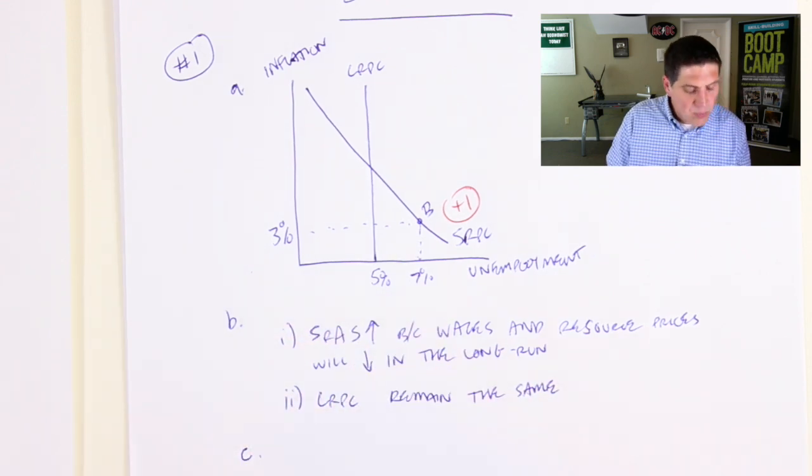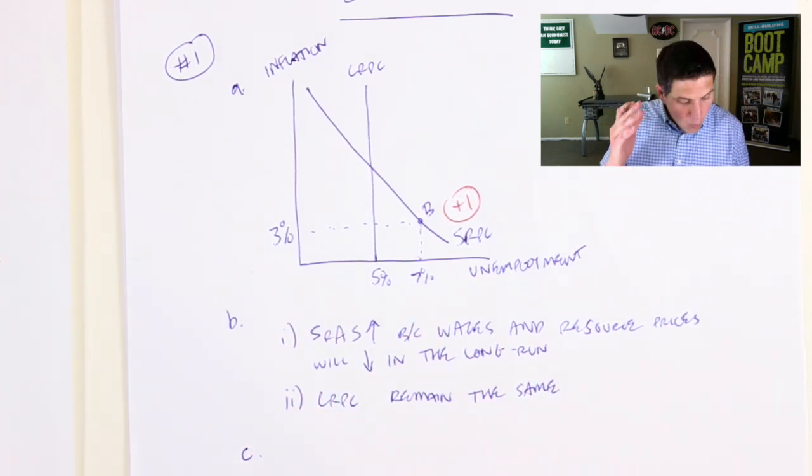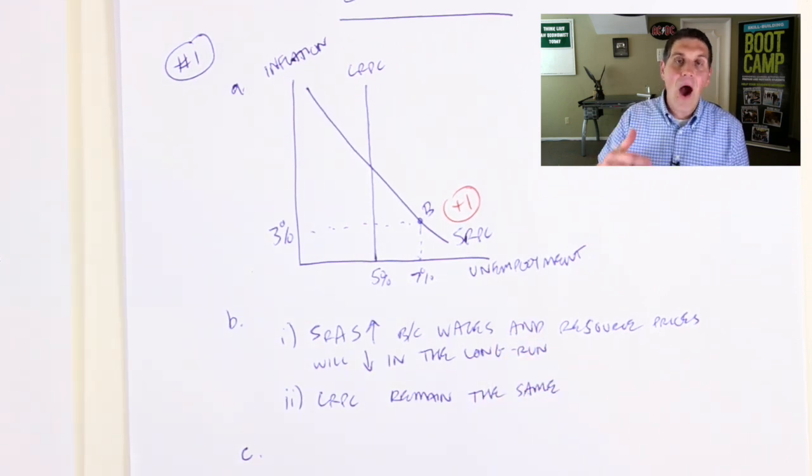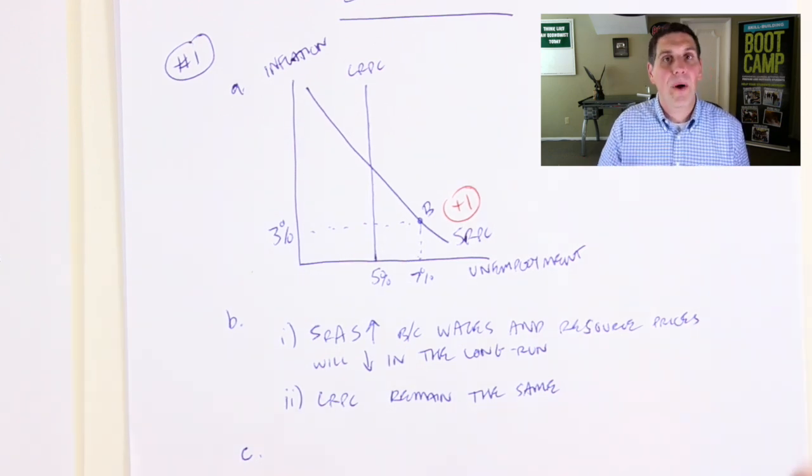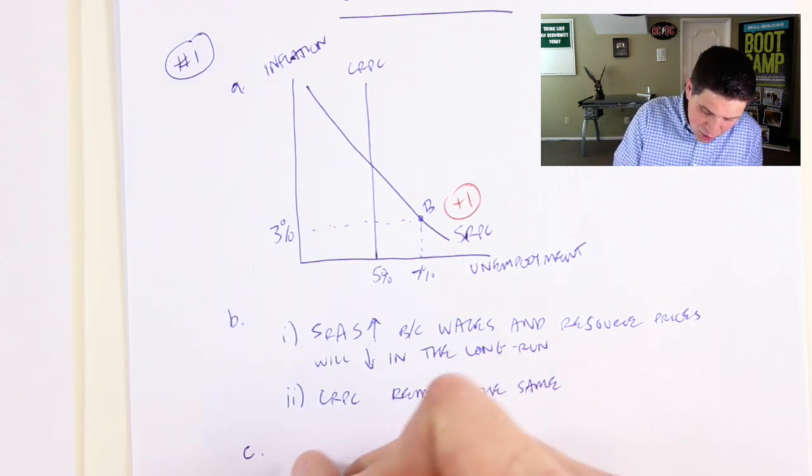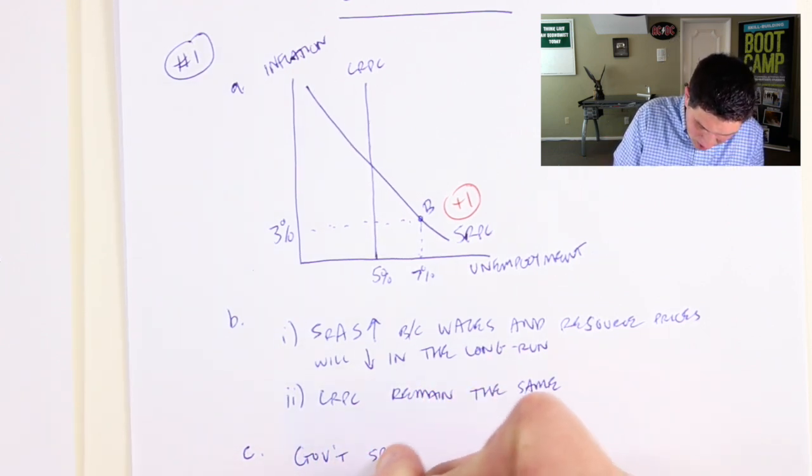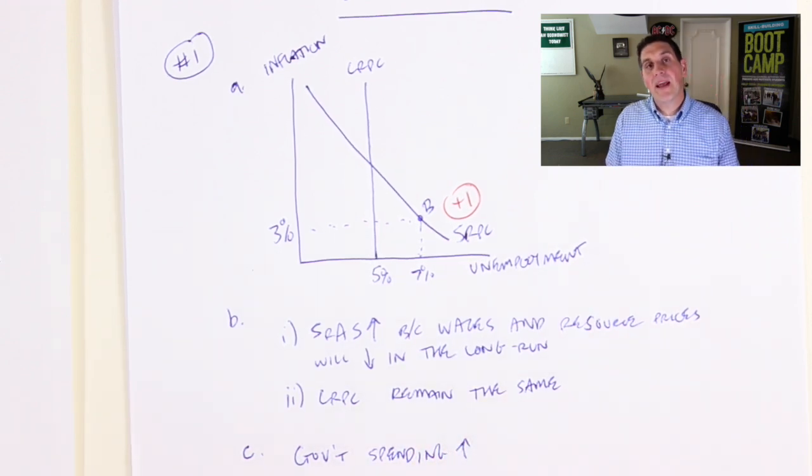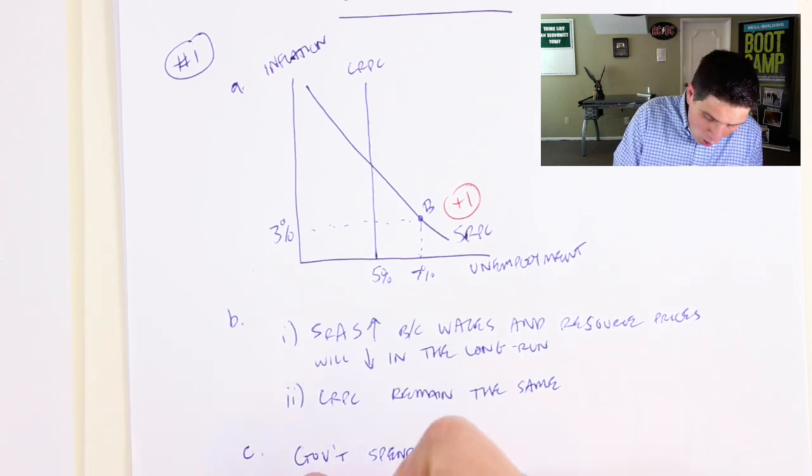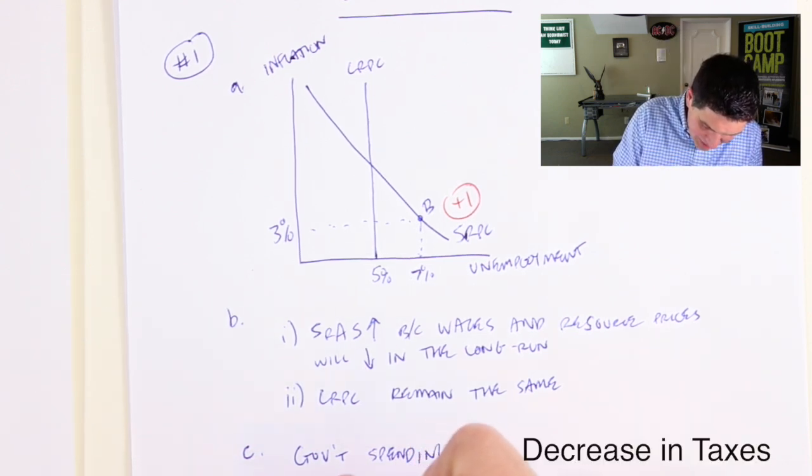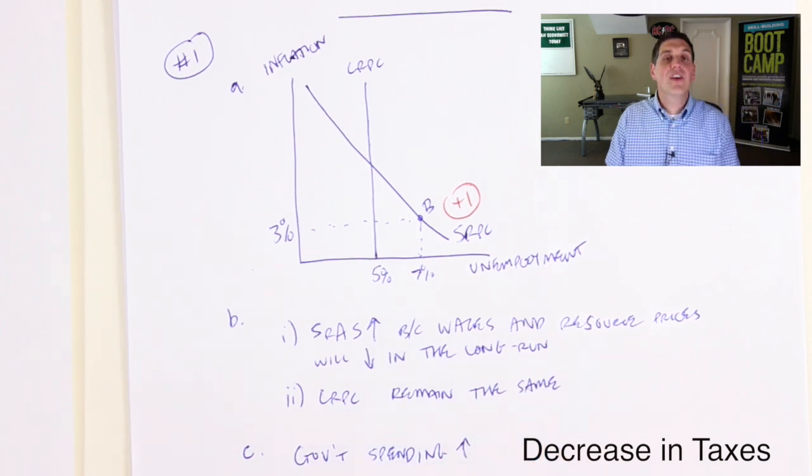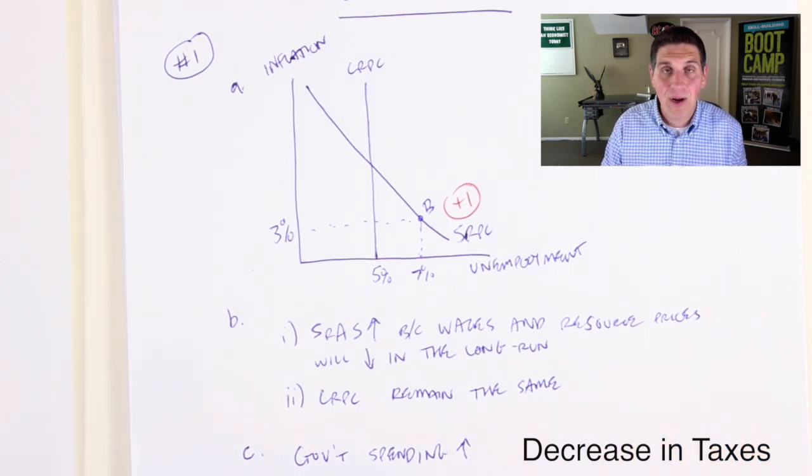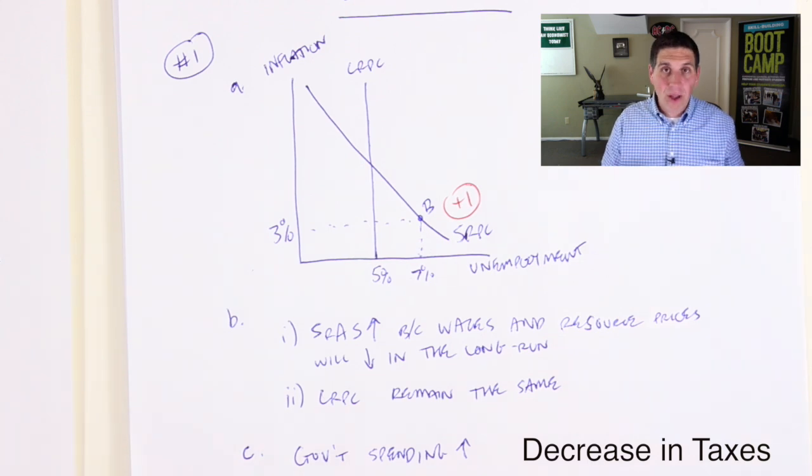Now, in C, they switch over to fiscal policy. So they ask you, what is a fiscal policy that could reduce unemployment, and basically that question is saying, how can fiscal policy affect and help a recession? So the answer is two different answers. You could say government spending could increase, right? So one thing, could increase government spending. That's a fiscal policy that can close a recessionary gap. Or you can say the taxes could be decreased. Either of these are right answers. These will give you the points you're looking for.